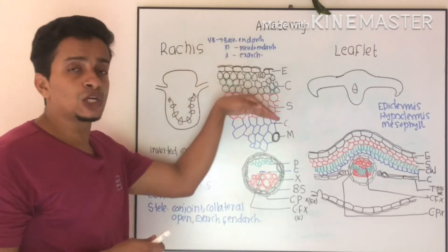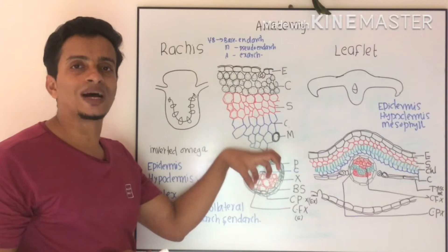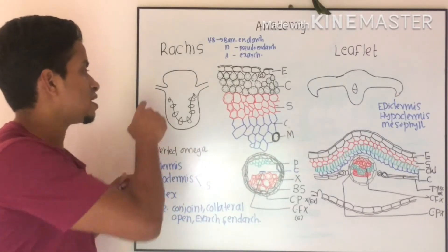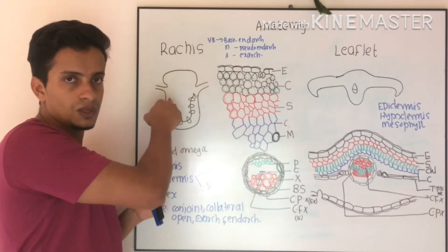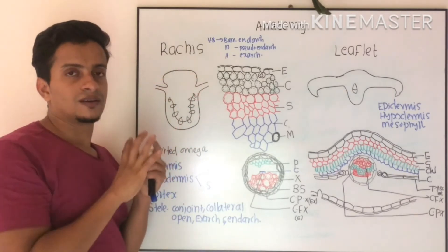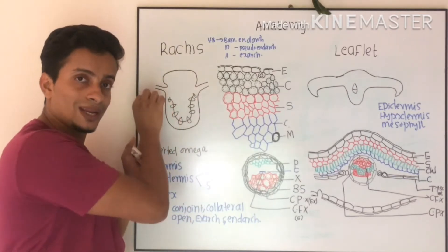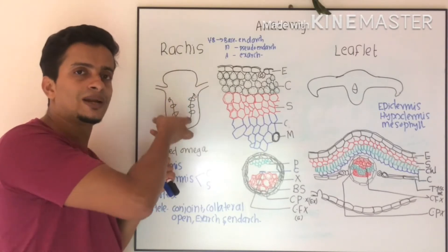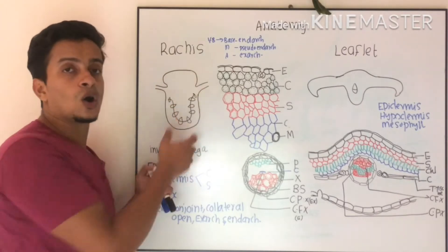Inner to the cortex, you can see the presence of vascular bundles. Vascular bundles are arranged like an inverted omega. Numerous bundles can be seen, and these bundles are arranged like an inverted omega.